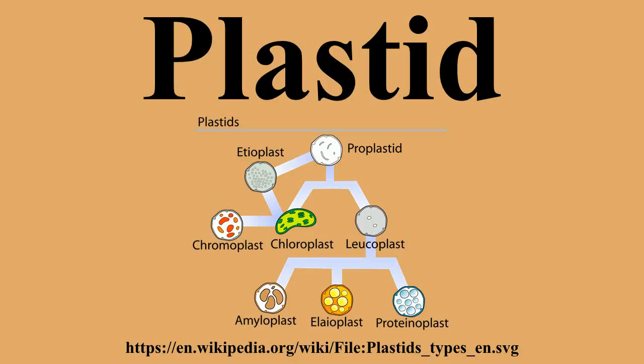Plastids in algae: in algae, the term leukoplast is used for all unpigmented plastids, and their function differs from the leukoplasts of plants. Etioplasts, amyloplasts, and chromoplasts are plant-specific and do not occur in algae. Plastids in algae and hornworts may also differ from plant plastids in that they contain pyrenoids. Glaucocystophytic algae contain muroplasts, which are similar to chloroplasts except that they have a cell wall similar to that of prokaryotes. Rhodophytic algae contain rhodoplasts, which are red chloroplasts that allow the algae to photosynthesize to a depth of up to 268 meters.